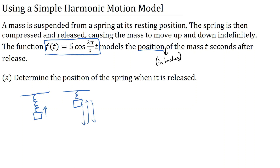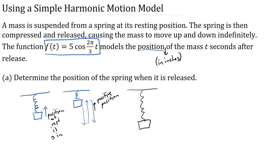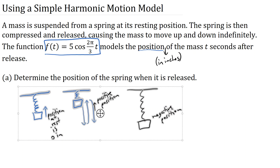So, t seconds after release. At its resting position, the position is zero inches. When the spring is compressed upward, we might call that a positive position. Whenever it goes below its resting position — when gravity pulls it back down — that would be a negative position in inches. That's the structure of what we're working with. Now let's get down to working with this model and understanding how to use it.